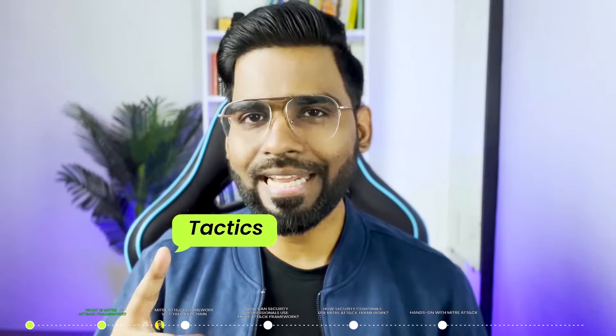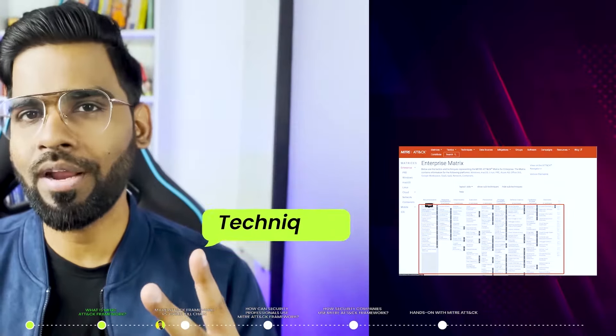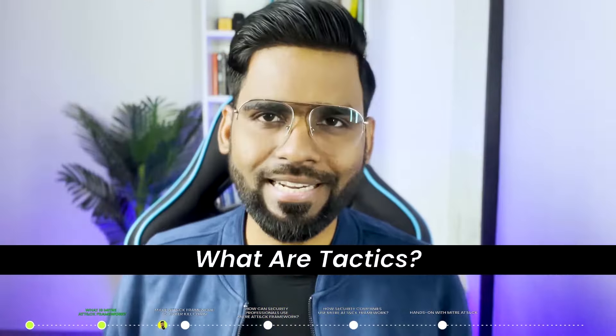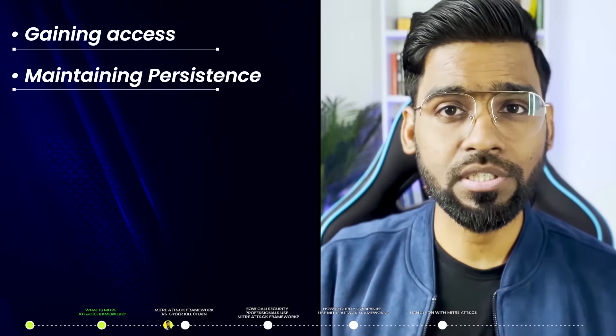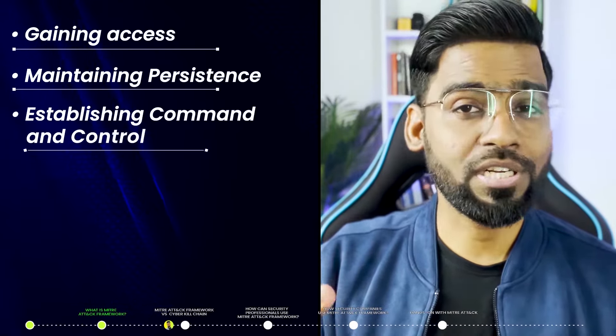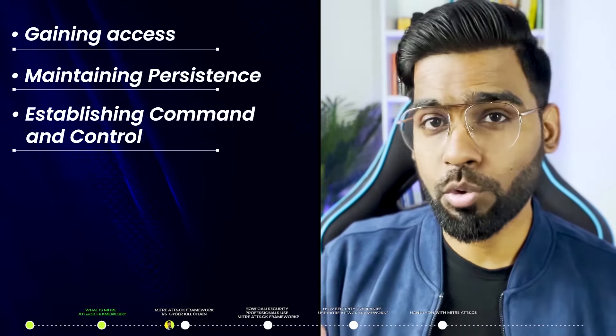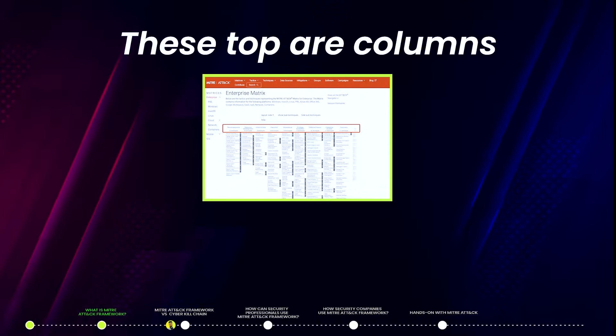In this video, we'll talk about the Enterprise matrix. There are two core components of this matrix — the first is tactics, and the second is techniques. Tactics talk about the technical objectives of the attackers, such as gaining access, maintaining persistence, establishing command and control, and many more. The columns at the top are tactics.